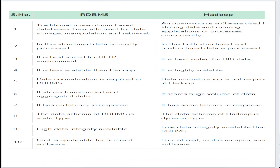Now let's look at the differences between RDBMS and Hadoop. RDBMS uses traditional row-column based databases for data storage, manipulation, and retrieval. Hadoop is completely open-source software where you can store data and run many applications concurrently and in parallel. RDBMS processes mostly structured data, whereas Hadoop can process structured, unstructured, and semi-structured data. RDBMS is best suited for OLTP environments, while Hadoop is best suited for big data applications. RDBMS is less scalable, whereas Hadoop is highly scalable.